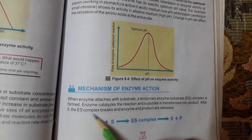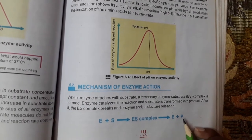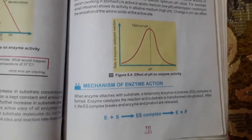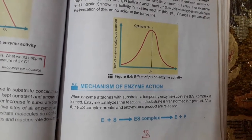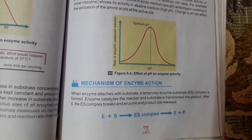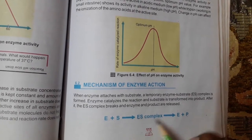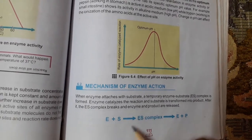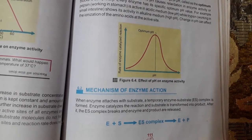After the reaction, the ES complex breaks and the enzyme and products are released. The substrate becomes converted into product and the enzyme is released. As I told you before, in any chemical reaction the catalyst does not directly involve — it only speeds up the reaction. Enzyme is a biological catalyst, so after the completion of the reaction, the enzyme will be released after the formation of product. This is how enzymes work in different reactions.